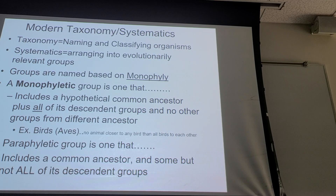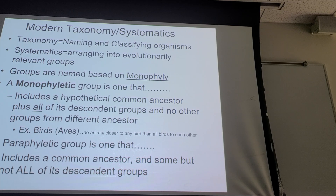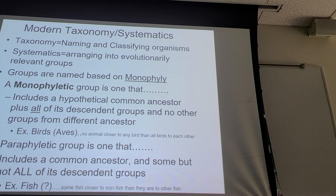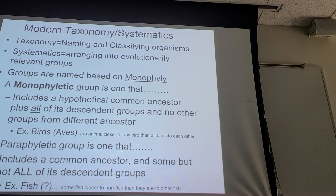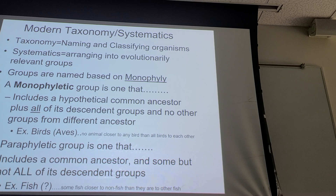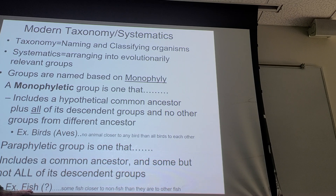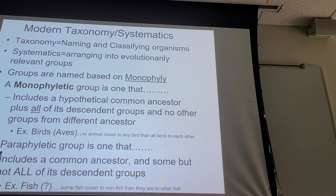A monophyletic group has one common ancestor and everybody that evolved from that. A paraphyletic group includes a common ancestor and some of the organisms that evolved, but not all of them. Fish is an example of that — some fish are more closely related to each other, or some are more closely related to things that aren't fish than to all the other fish. The term fish includes a common ancestor plus some descendants but excludes others, making it paraphyletic.